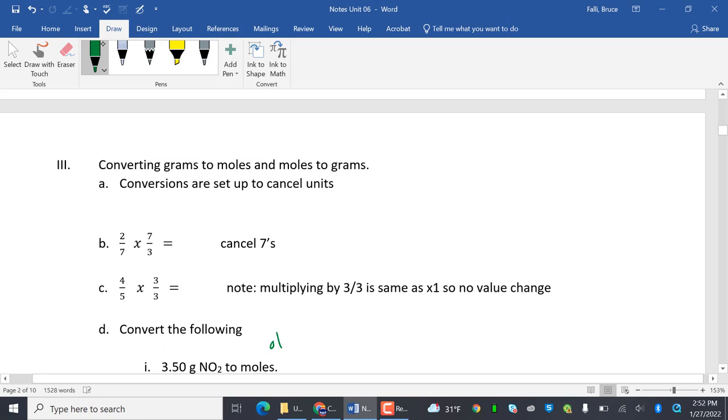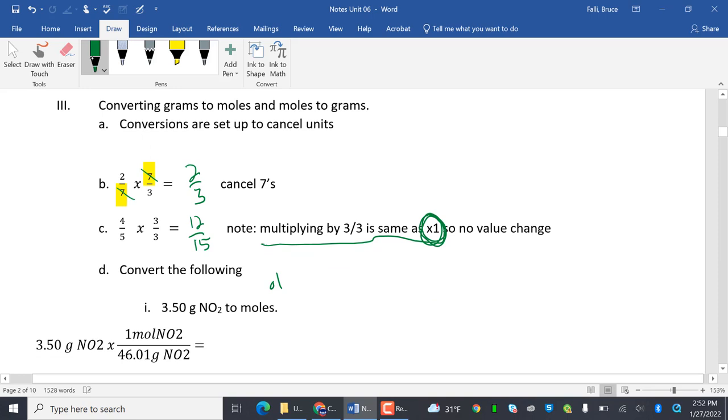Converting grams to moles and moles to grams. When we do conversions, we're just setting things up to cancel. So two sevenths times seven thirds. Do you remember in math class they taught you to cancel? Those cancel out and I get two thirds. Now what about multiplying by three over three? Multiplying by three over three is the same as multiplying by one. We know multiplying by one doesn't do anything. But in this case, we can change it to be 12 fifteenths. So this is helping us out in a secret way. When we do our conversions, we're really multiplying by one.